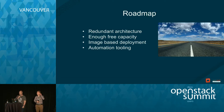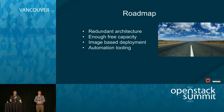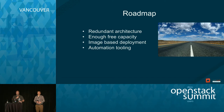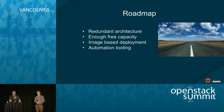We want something efficient, fast, and reproducible. Our roadmap for this presentation covers: the importance of architecture, the importance of having free capacity to move VMs around, image-based deployment and workflow as the key to reproducibility, and automation as the number one thing to think about when doing an upgrade.